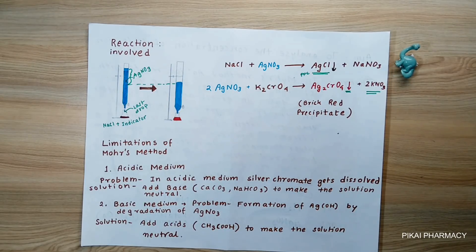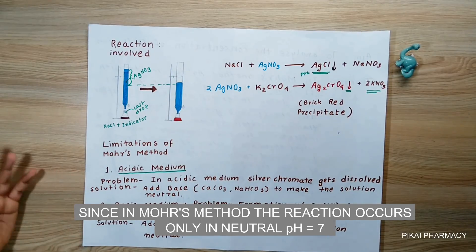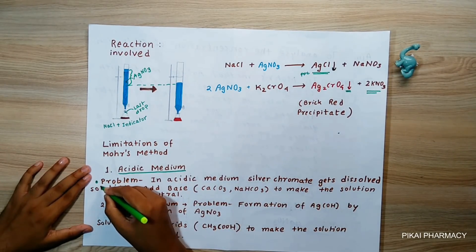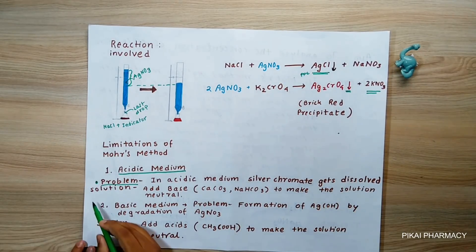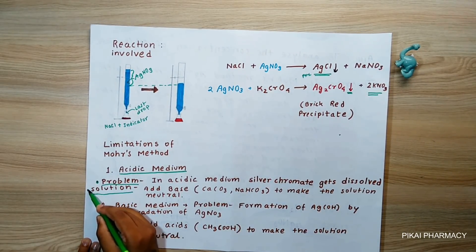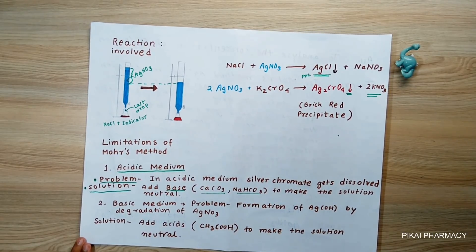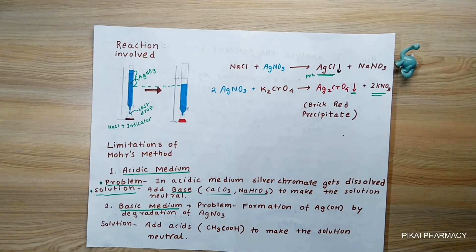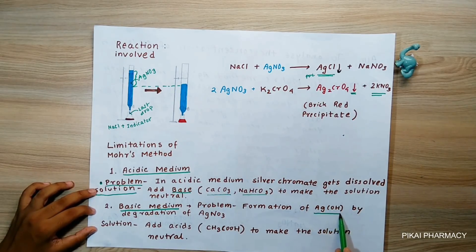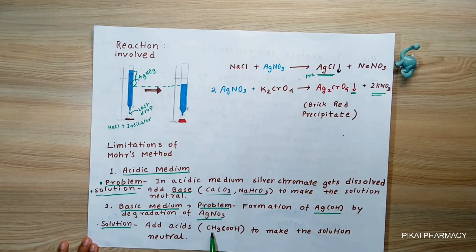The Mohr method has limitations. First, it cannot be operated in acidic medium — at a pH below 7, the silver chromate that gives the endpoint dissolves, preventing a proper endpoint. To fix this, we add a base like calcium carbonate or sodium bicarbonate to return the solution to neutral pH. In basic medium (pH above 7), the titrant AgNO₃ degrades to form AgOH, which is also a problem, solved by adding an acid like acetic acid to restore neutral pH.